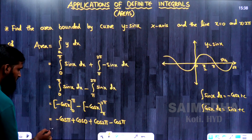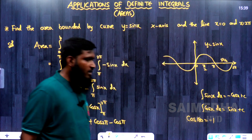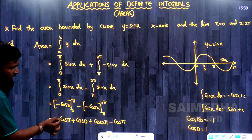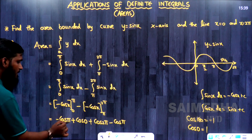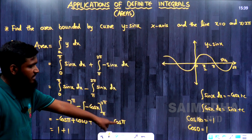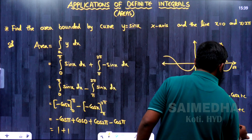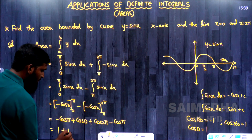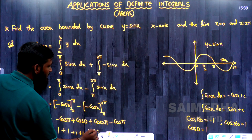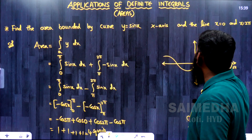Substituting: first part gives (-(-1)) + 1 = 1 + 1. Second part gives (-(-1)) + 1 = 1 + 1. So the total area is 1 + 1 + 1 + 1 = 4 square units. Area is always expressed in square units.